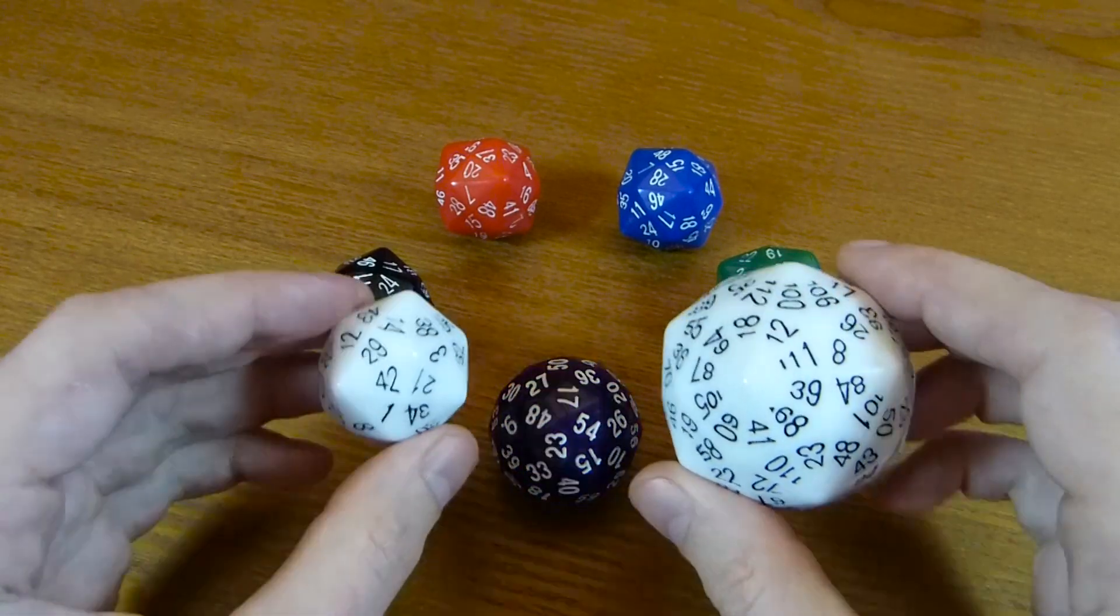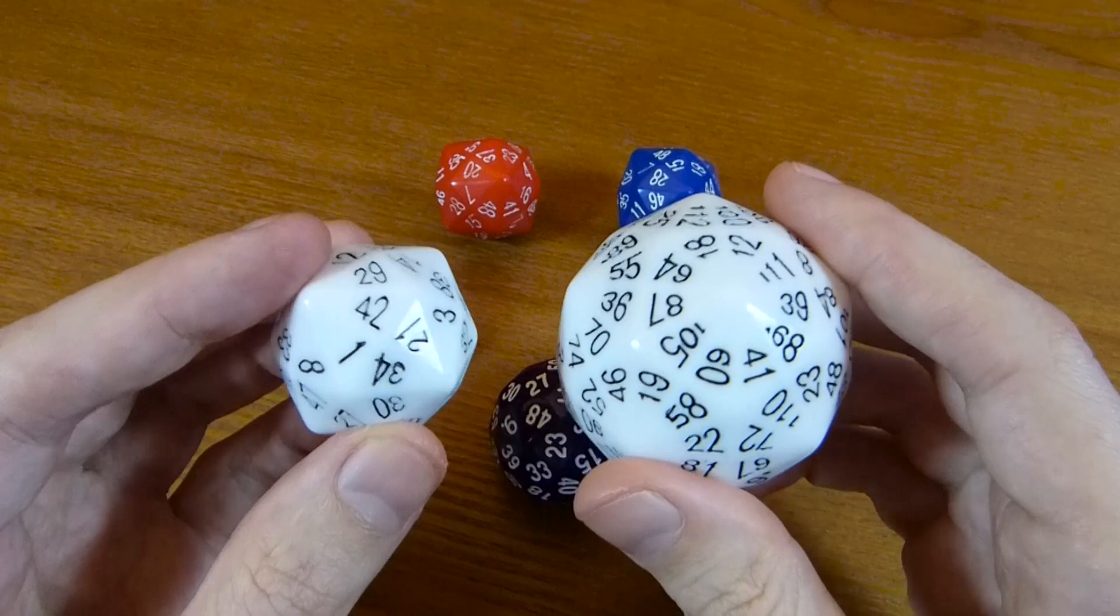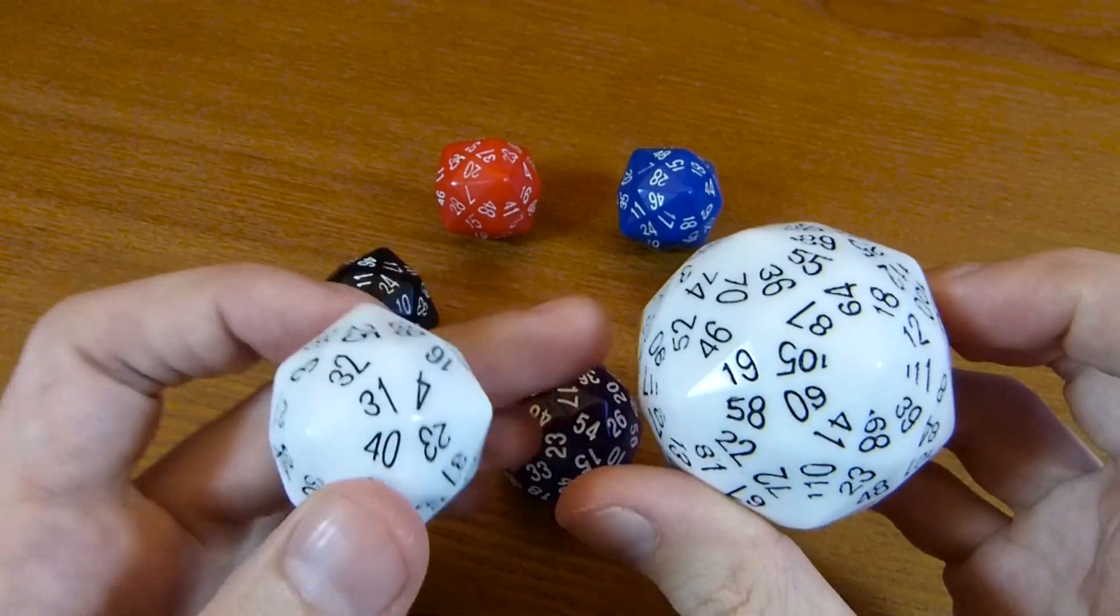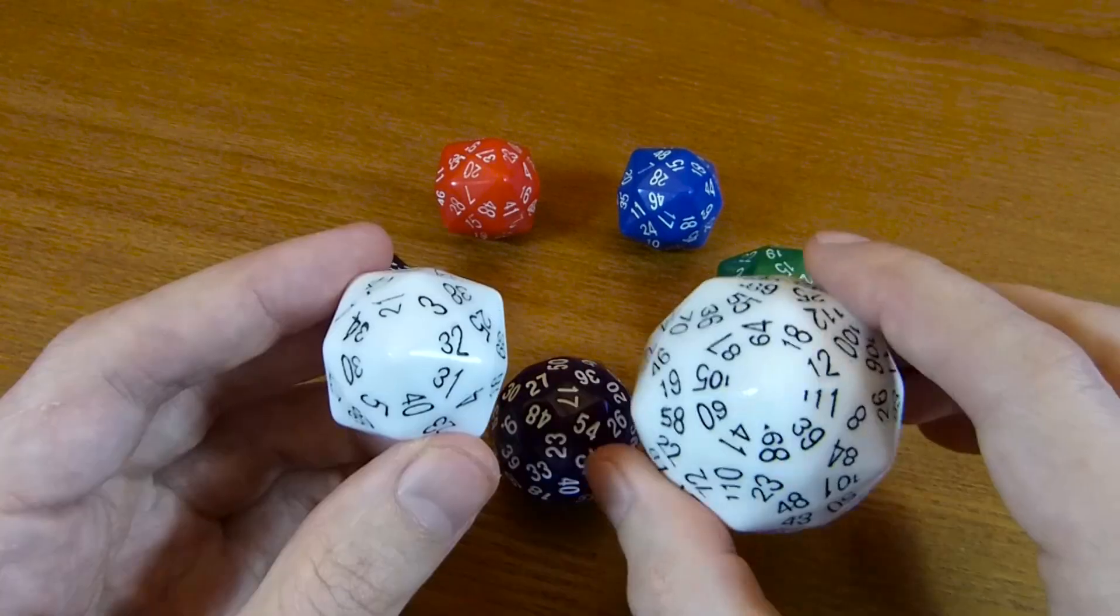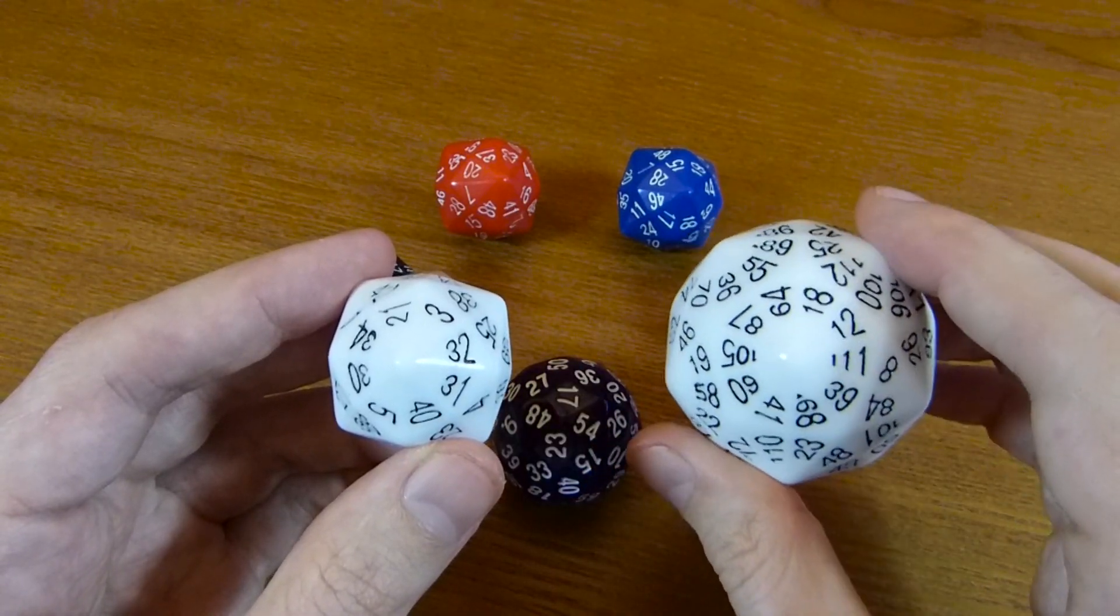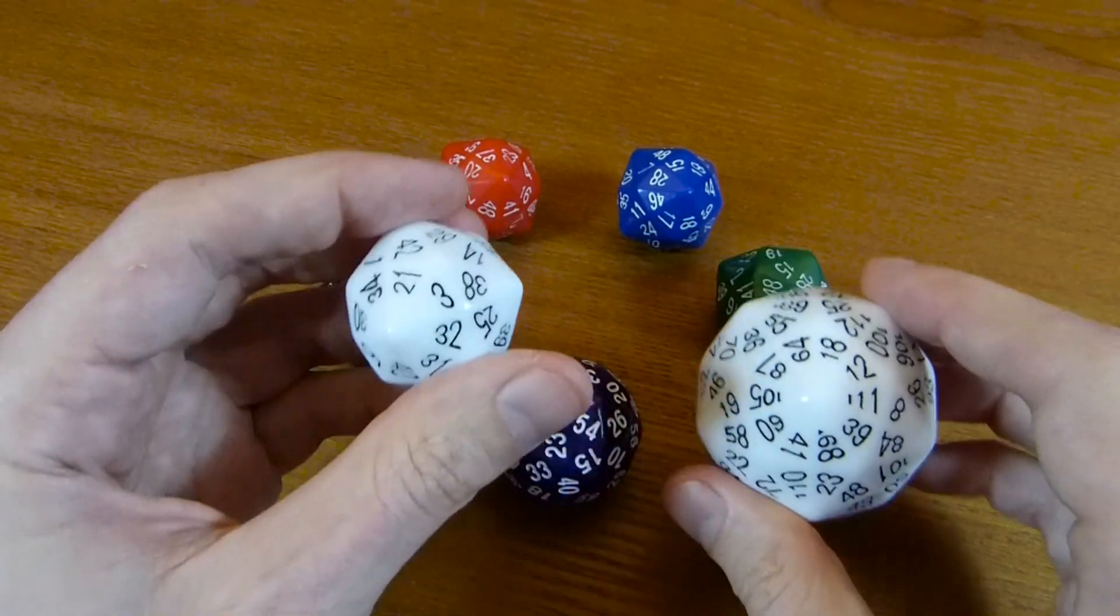The numbering scheme is similar, or the way the numbers are drawn is similar to the D120, because the shape of the triangular face is similar. So the D120, we have these 10 numbers arranged around each vertex, and there's kind of a pentagon you can see here.